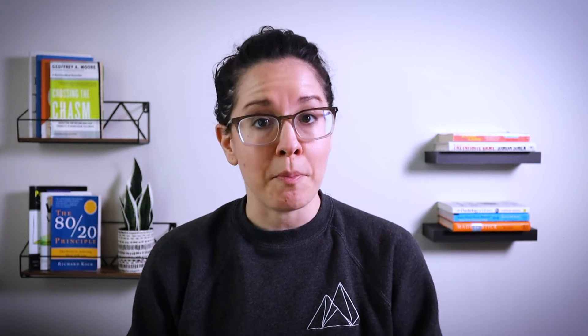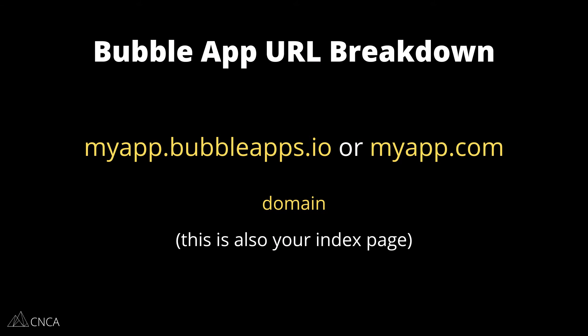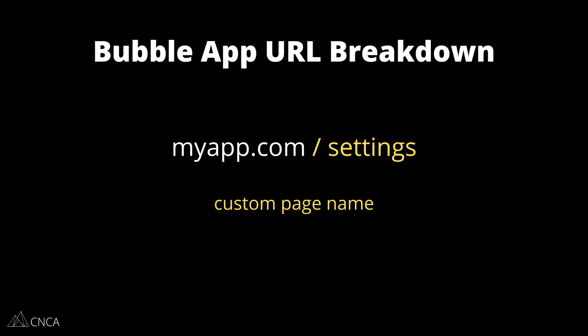The start of every page URL in your application is going to be your domain. So whether you're on Bubble's hosted domain or your own connected custom domain, this is the address that takes you to your app's index page. The index page is a built-in page — it's sort of the root of your application. Every custom page you add, the name of that page is going to follow that domain. So this is the base structure for all of your pages.